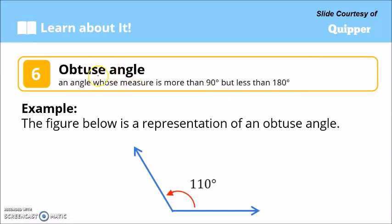Another kind is the obtuse angle — an angle whose measure is more than 90 degrees but less than 180 degrees. In this figure, the angle measures 110 degrees, which is more than 90 degrees but less than 180 degrees, so it is an obtuse angle.